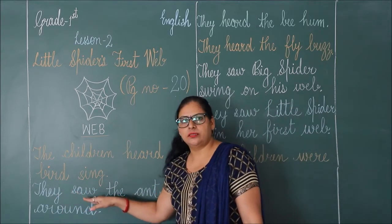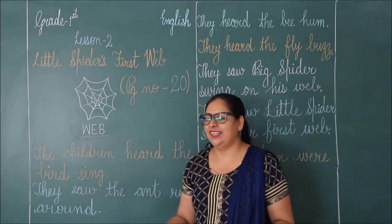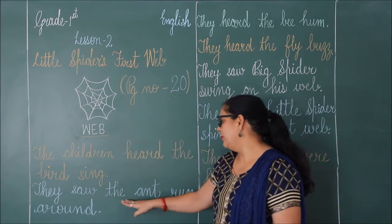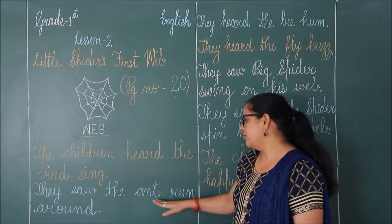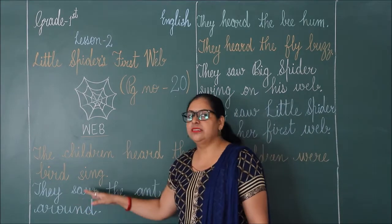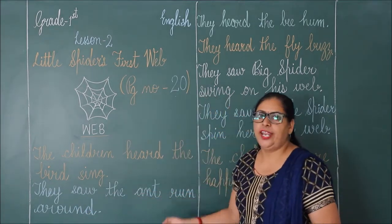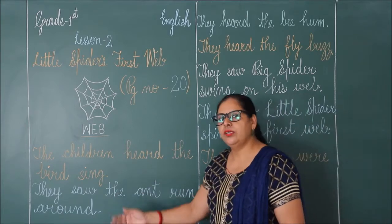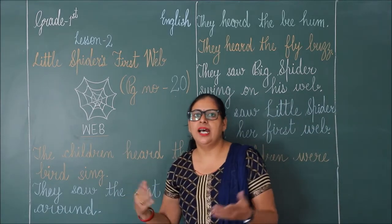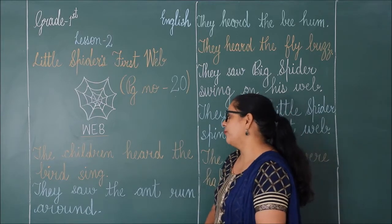They saw — s-a-w — saw means dekha. They saw the ant run around. Unhone dekha — they saw — the ant run around, yani idhar udhar doarte huye. Unhone kisko dekha? Yes, ant ko.